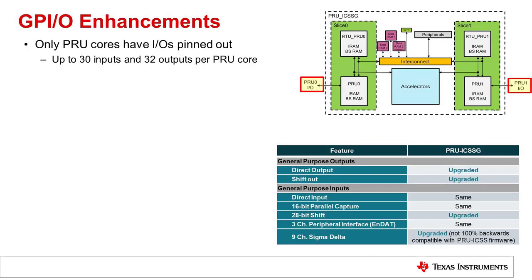Let's next look at the PRU ICSSG IOs, which are only available on the PRU cores. The PRU ICSSG has all the same IO modes as the previous PRU ICSS, just with some enhancements. The basic IO modes include a direct output and input mode for simple bitbang operations, a shift-out and shift-in serializer option, and a parallel capture input. Additionally, there are peripheral interface serializers for NDAT or other general-purpose applications, and a nine-channel sigma-delta. Each PRU core can only be configured for one input and one output mode at a given time.